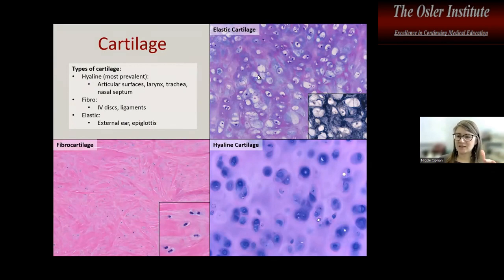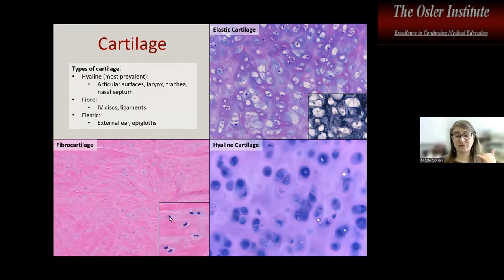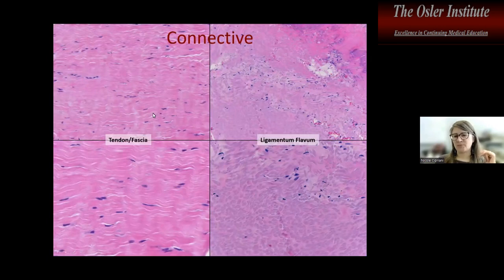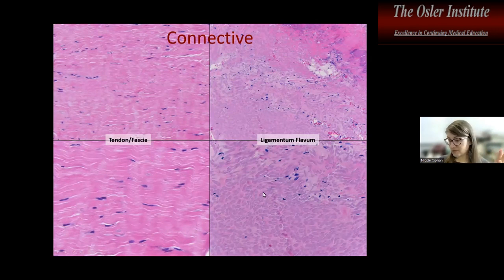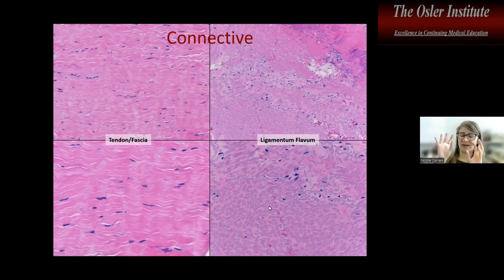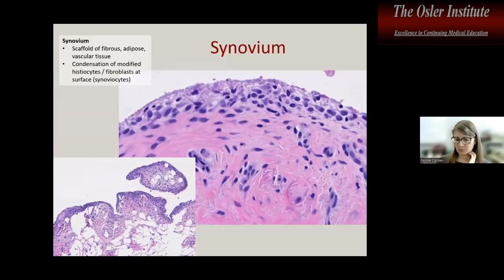Fibrocartilage is found in your symphyses, intervertebral discs, and ligaments. Connective tissue attached to bone includes tendon or fascia with regular collagen, or ligamentum flavum, which appears yellow in gross appearance — hence 'flavum' — and is full of elastic fibers.